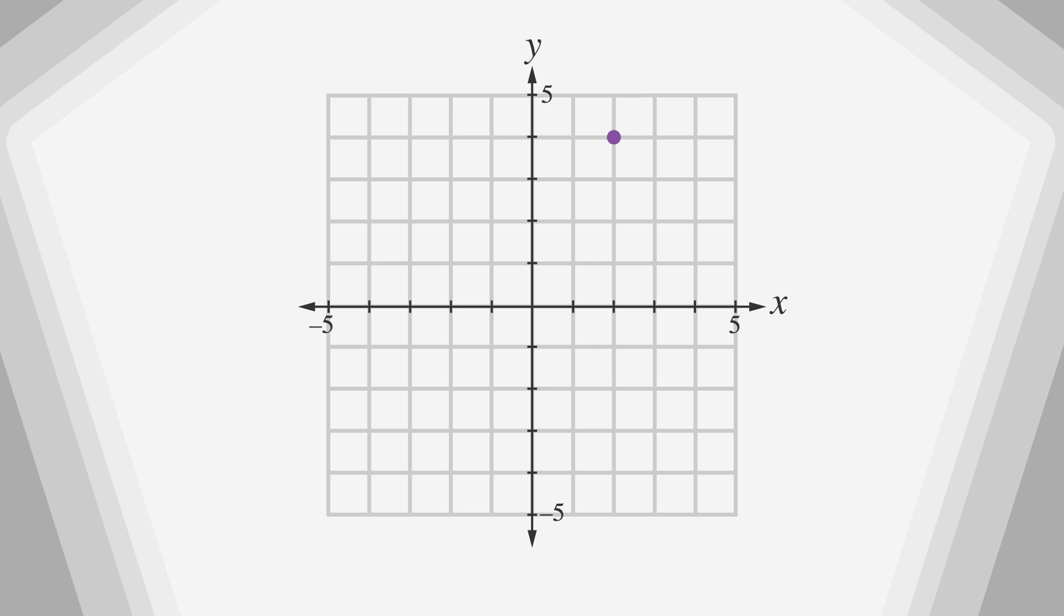Let's start by looking at coordinate point two comma four. The first value in a coordinate pair always tells us how far to the left or right our point is, and our second value always tells us how far up or down it is. So two comma four is two units to the right and four units up from the origin.